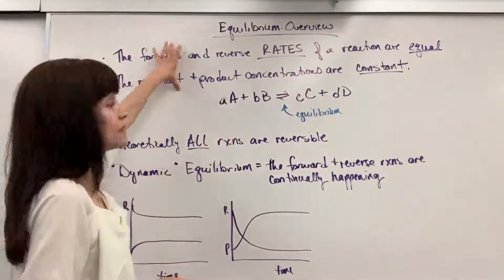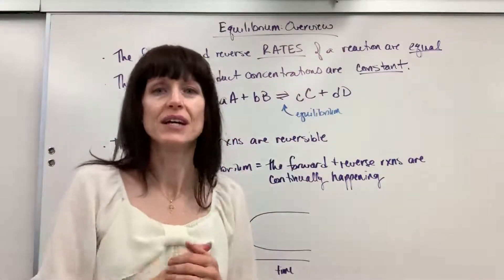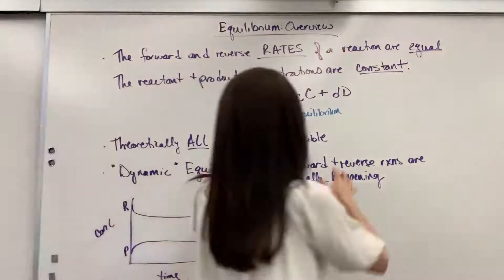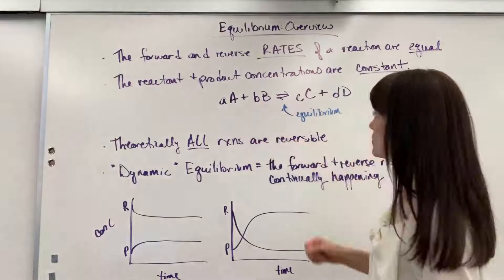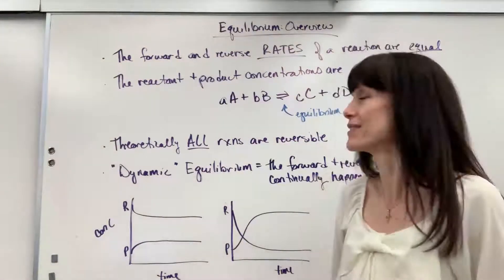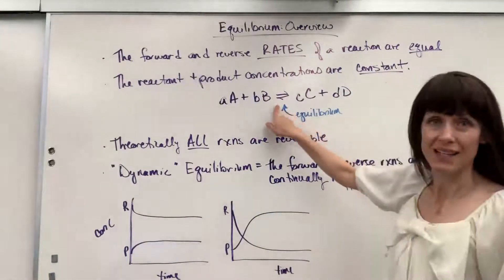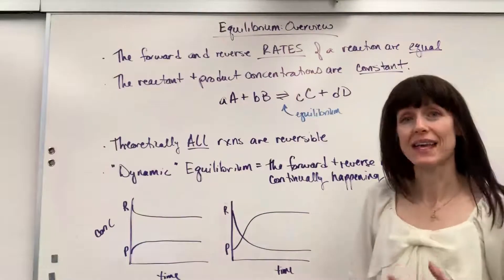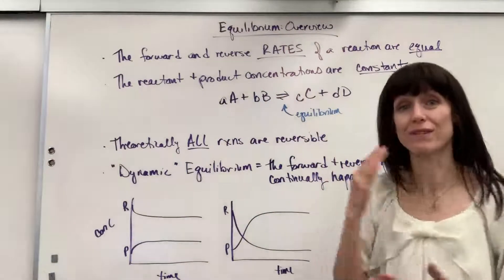Those are the two big things that are going to drive everything you do in your equilibrium unit. Here I wrote just a generic equation. The lowercase letters indicate the coefficients and the capital letters indicate our compounds, our elements. It's that double arrow I wanted to point out — that indicates equilibrium, that this reaction is reversible.